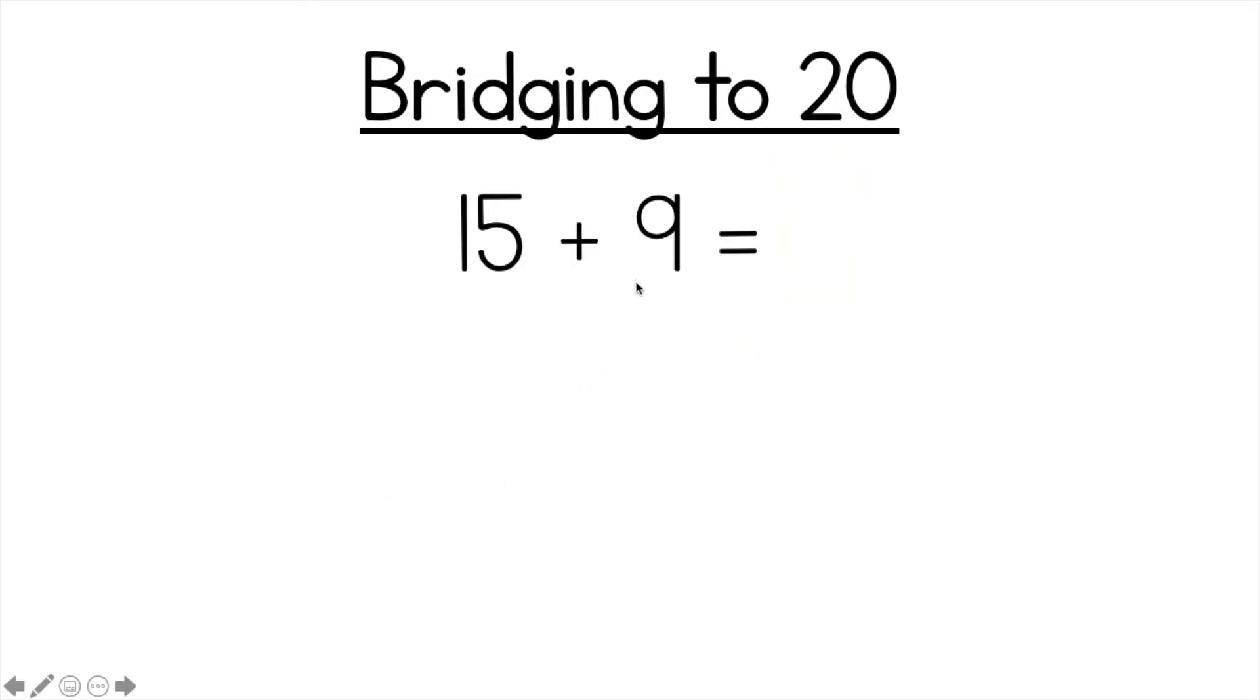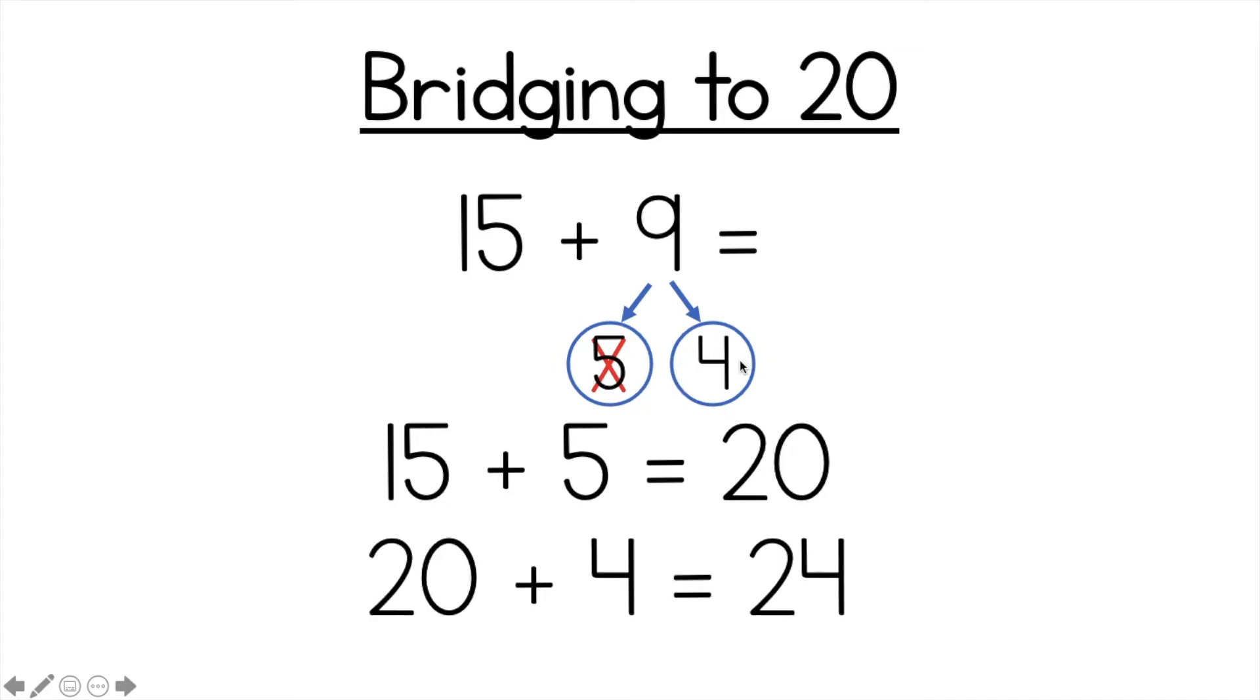Another example. 15 plus 9. Well my friend of 20 would be 5. So I'm going to break 9 into 5 and 4 because 5 plus 4 equals 9. Alright so now all I have to do is 15 plus 5. That's easy because I did that before. 15 plus 5 is 20. Keep 20 in your head. You've done that. Now you just have to add the last number. 20 plus 4 is 24. Your answer would be 24.